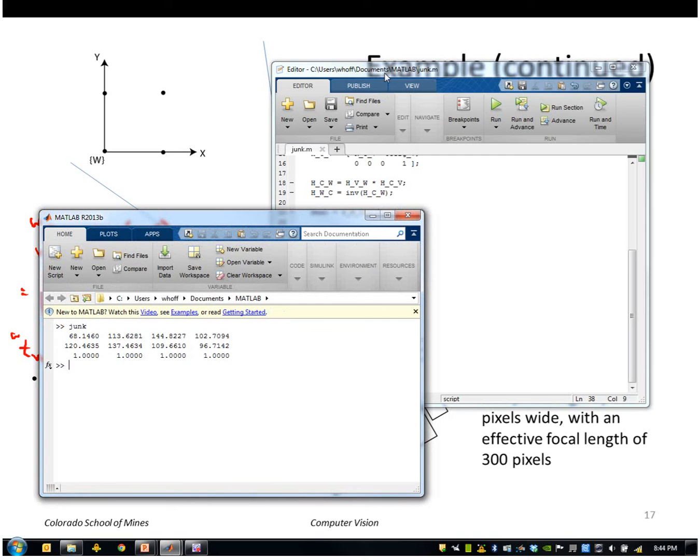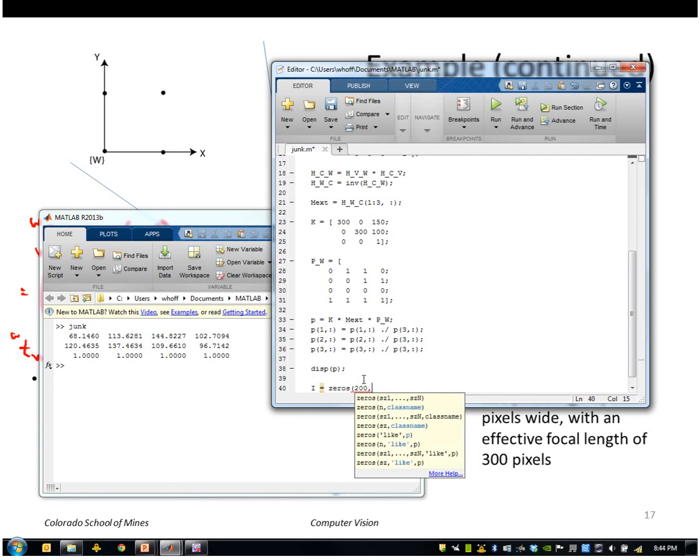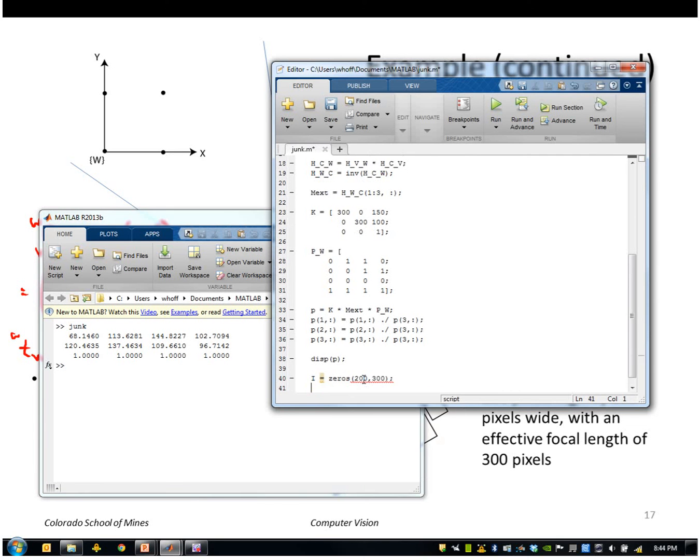Just to wrap this up, I can create an image of these points. I'll just create a synthetic image of size 200 by 300. And for every point, every one of these four points, I will calculate the row as I need to round to the nearest integer like that.